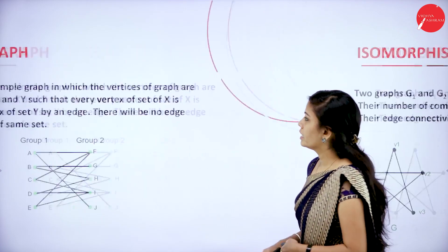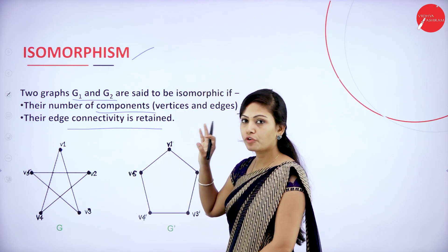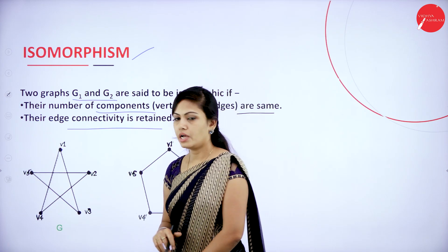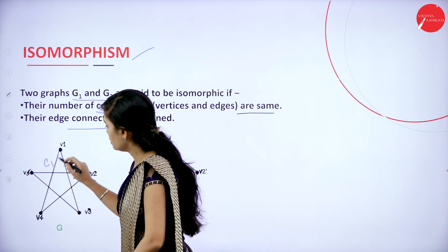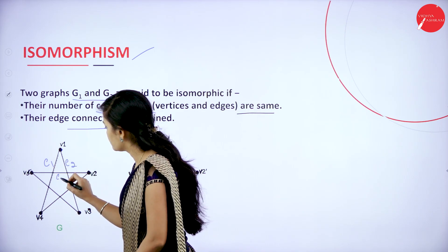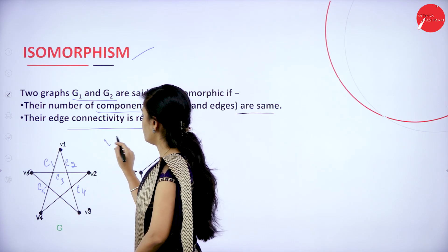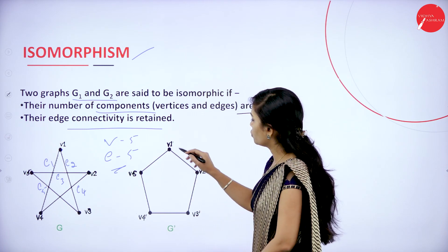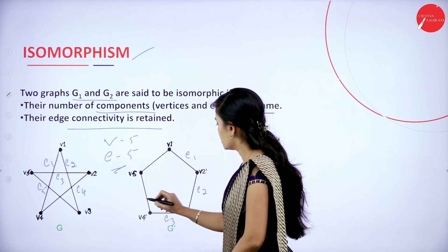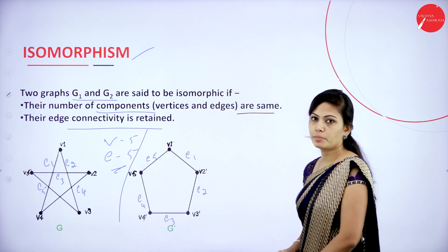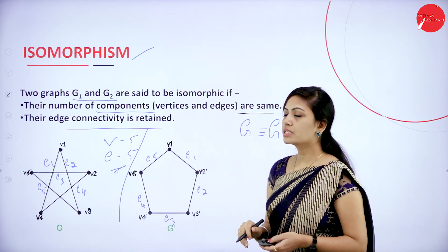This is just a two-mark question. Next is isomorphism — a very important concept. Isomorphism means the number of components, that is vertices and edges, are the same. So G is equivalent to G dash. We have five vertices — V1 through V5 — and five edges: E1, E2, E3, E4, E5. Here also we have five vertices and edges E1, E2, E3, E4, E5. Both vertices and edges are the same. This is called as isomorphism.